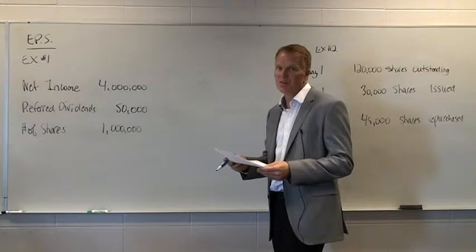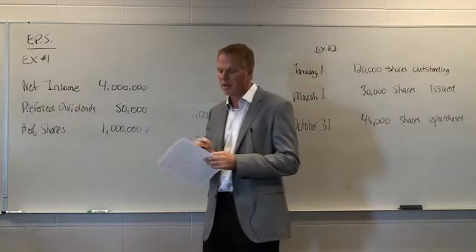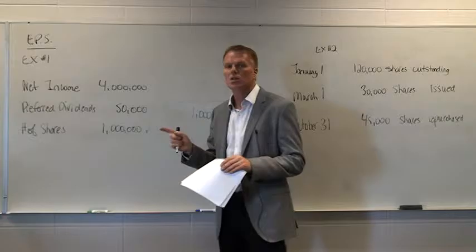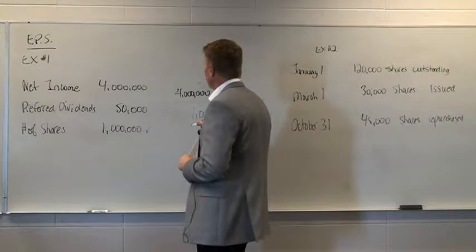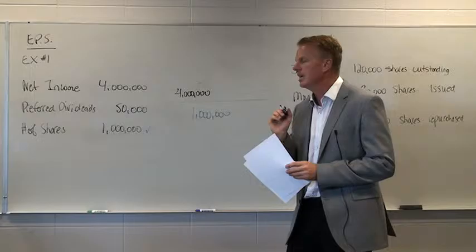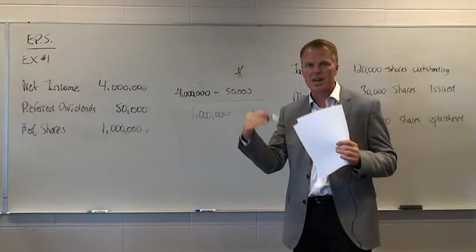We've got to look at some very important information. In this example, the number of shares is one million — pretty straightforward, one million shares. What is the net income amount available to the common shareholders? Is it as easy as the four million? No. What we have to recognize is that the first right of dividends goes to the preferred dividend shareholders. So we have to take the net income and subtract out the preferred dividends. This is often forgotten on tests and quizzes.